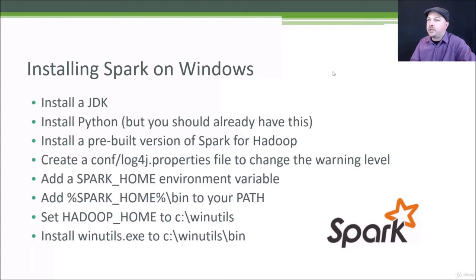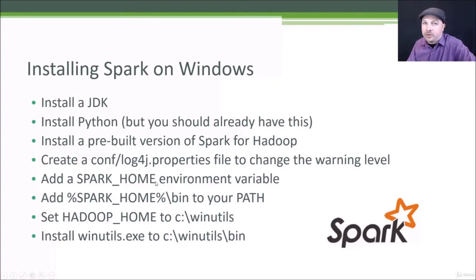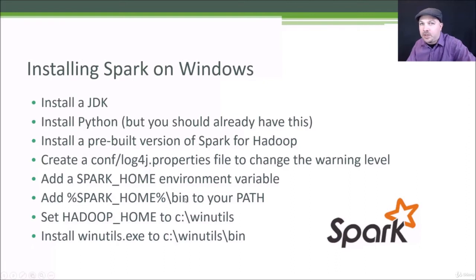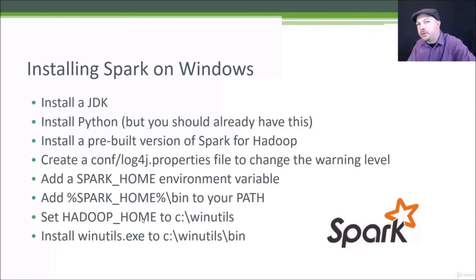Then we have a few configuration things to take care of. We want to adjust our warning level so we don't get a bunch of warning spam when we run our jobs — basically you rename one of the properties files and adjust the error setting within it. Then we need to set up some environment variables so you can run Spark from any path. We'll add a SPARK_HOME environment variable pointing to where you installed Spark, then add SPARK_HOME/bin to your system path so that when you run spark-submit, PySpark, or any Spark command, Windows will know where to find it. Finally on Windows, we also need to set a HADOOP_HOME variable because Spark expects to find a little bit of Hadoop even on a standalone system, and we need to install a file called winutils.exe to that path. There's a link to winutils.exe in the resources for this lecture.